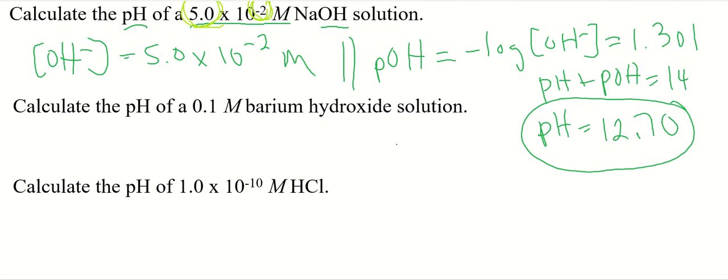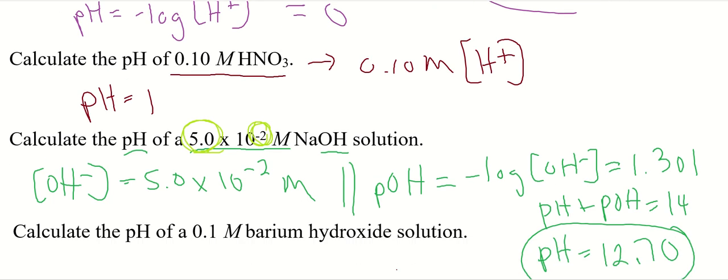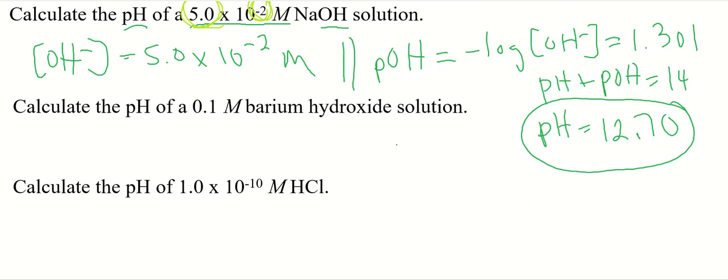Now this one's a little bit tricky because barium hydroxide, barium is a group 2 element, so it's going to have a 2 positive cation, and hydroxide is a 1 negative anion. So I'm going to crisscross that to get the formula unit, and it's going to be Ba(OH)2.